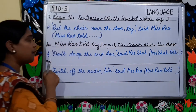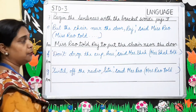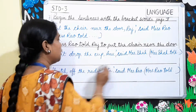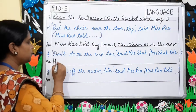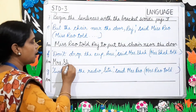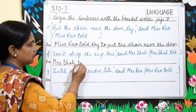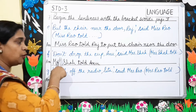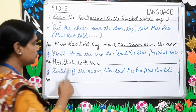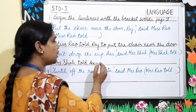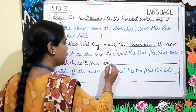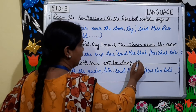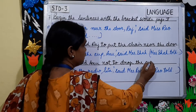Number F: 'Don't drop the cup, Anu,' said Mrs. Shah. In the bracket: 'Mrs. Shah told.' Start your sentence with 'Mrs. Shah told.' Mrs. Shah told Anu — 'don't' changes to 'not to.' So: Mrs. Shah told Anu not to drop the cup.